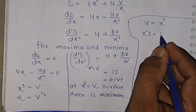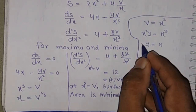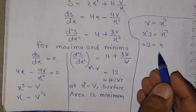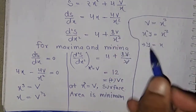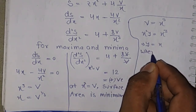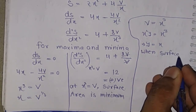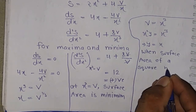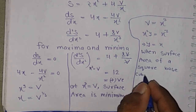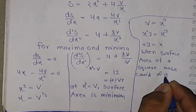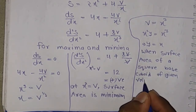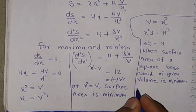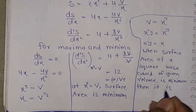When x cubed equals V, and V equals x squared y, we get x cubed equals x squared y, so y equals x. This means when the surface area is minimum, the height of the cuboid equals its side of the square base. Therefore, when the surface area of a cuboid of given volume is minimum, it is a cube.